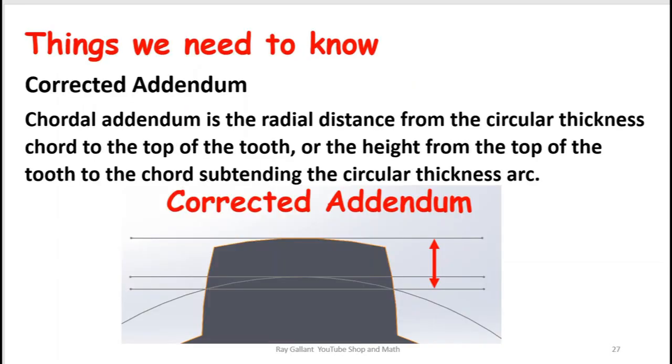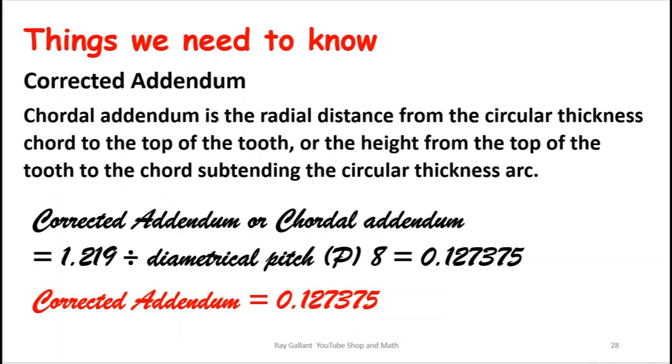The corrected addendum. So in this case our calculation for the corrected addendum is going to be 1.219 divided by the pitch. In our case is 8. Therefore in this case our corrected addendum which is going to be the distance that we measure from the top of the gear down is going to be 0.127.